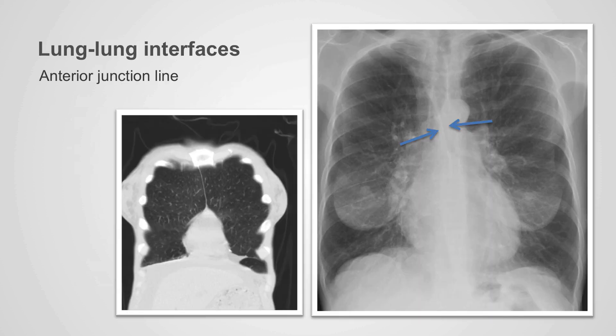If the two lungs touch each other, they can also form interfaces called junction lines. On this CT scan, we can see that the left lung is touching the right lung, and where the two lungs touch, the pleura will be identifiable. On this PA x-ray, we can identify the anterior junction line as this linear density extending through the mid-mediastinum. This should not be confused for a pneumomediastinum.